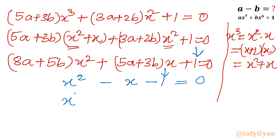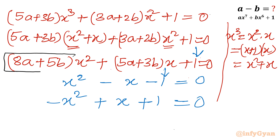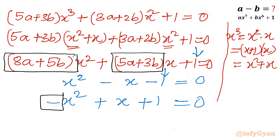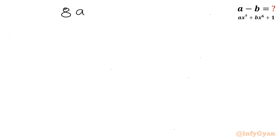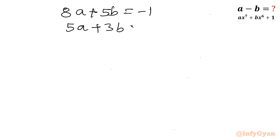I will rewrite the quadratic as negative x squared plus x plus 1. Now, simply comparing coefficients of x squared and x from both equations: 8a plus 5b equals negative 1, and 5a plus 3b equals positive 1.